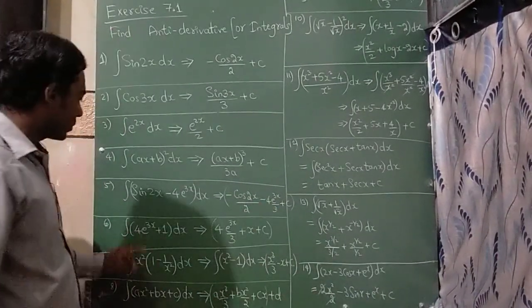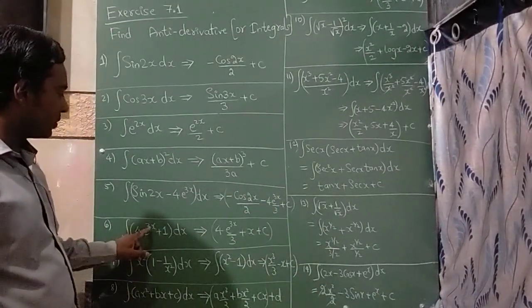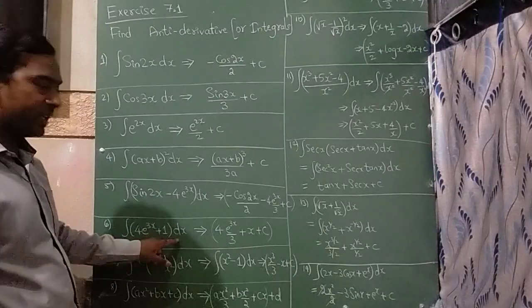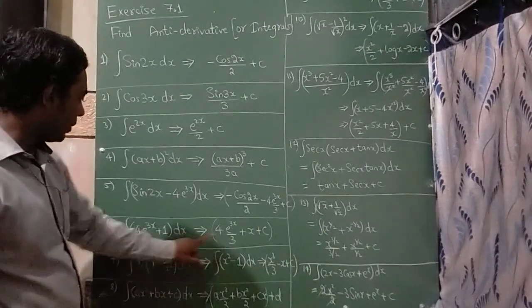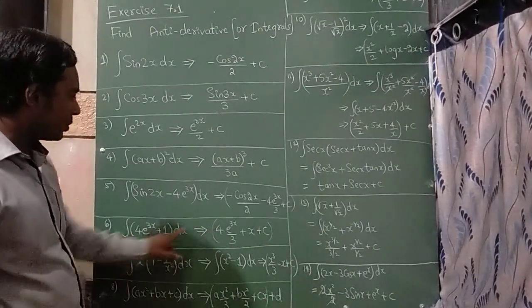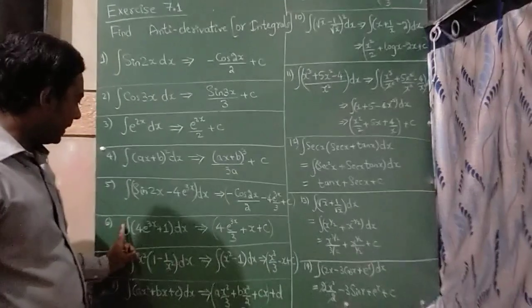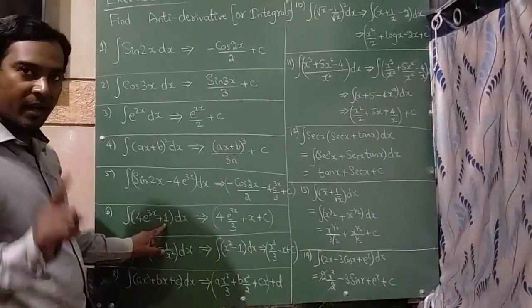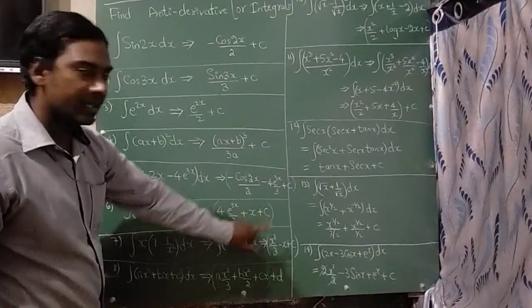The next question is integration of (4 e raise to 3x plus 1) dx. The answer is 4 e raise to 3x upon 3, and integration of 1 is x, plus c.